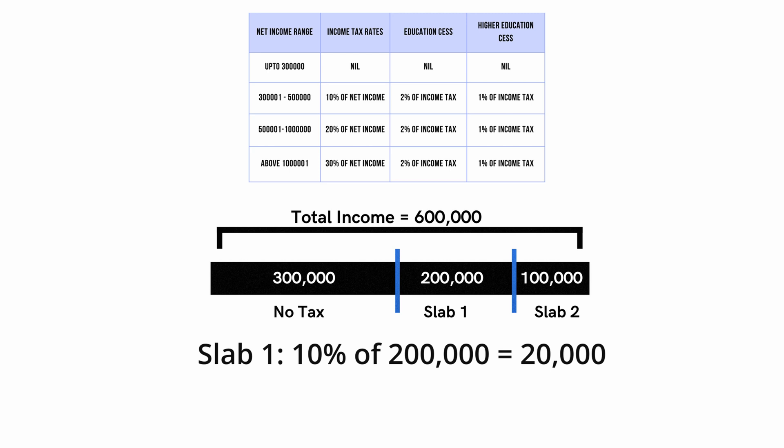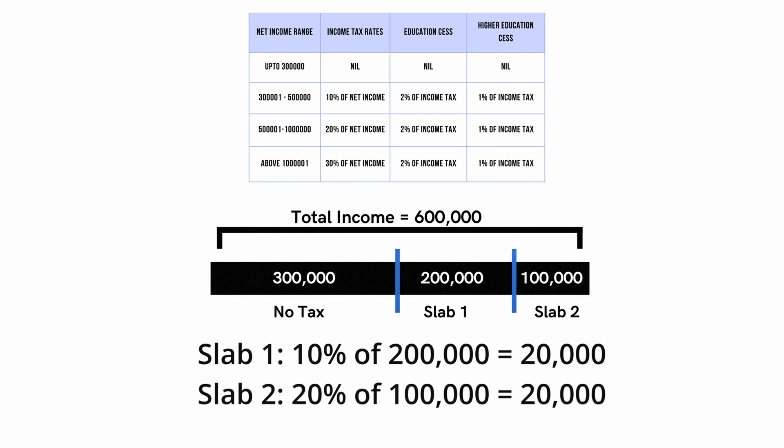So you are going to pay a total tax on 200,000 for slab one, that is 10% of 200,000, which amounts to 20,000. And another 100,000 which is lying on slab 2, because your total income is 600,000 which is above 500,000. So you are going to pay a tax for slab 2 as well on that extra 100,000, which will be 20%, amounting to another 20,000.